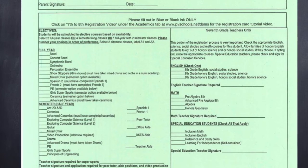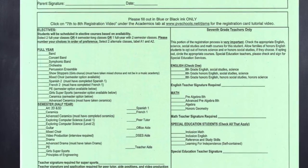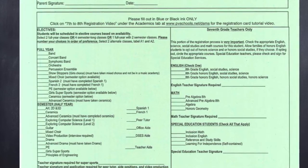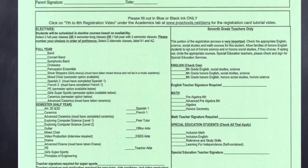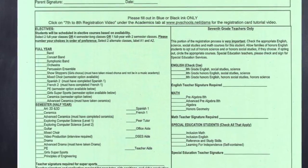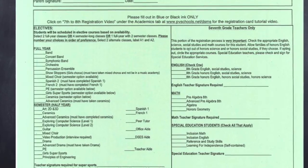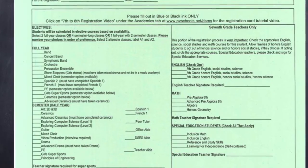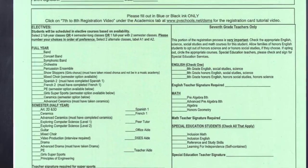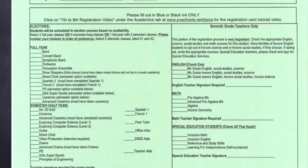As you look at the card, the electives are found on the left hand side. Notice there are several full year elective classes from which you may choose and several semester classes. This is why it is very important to read the course descriptions before making your choices. The course descriptions are found on the back of the card.